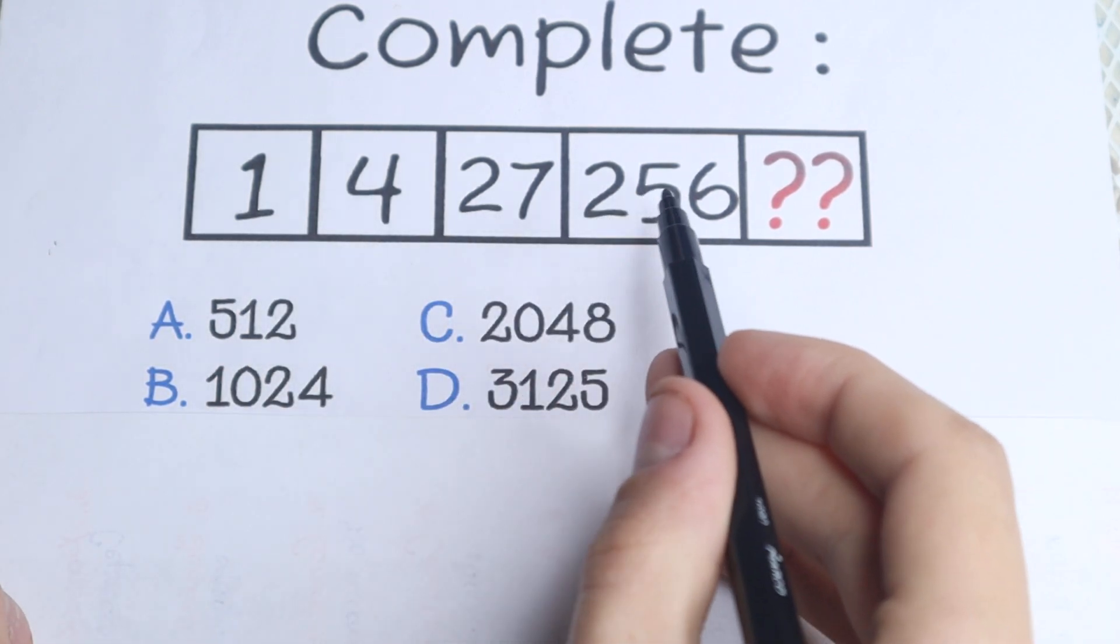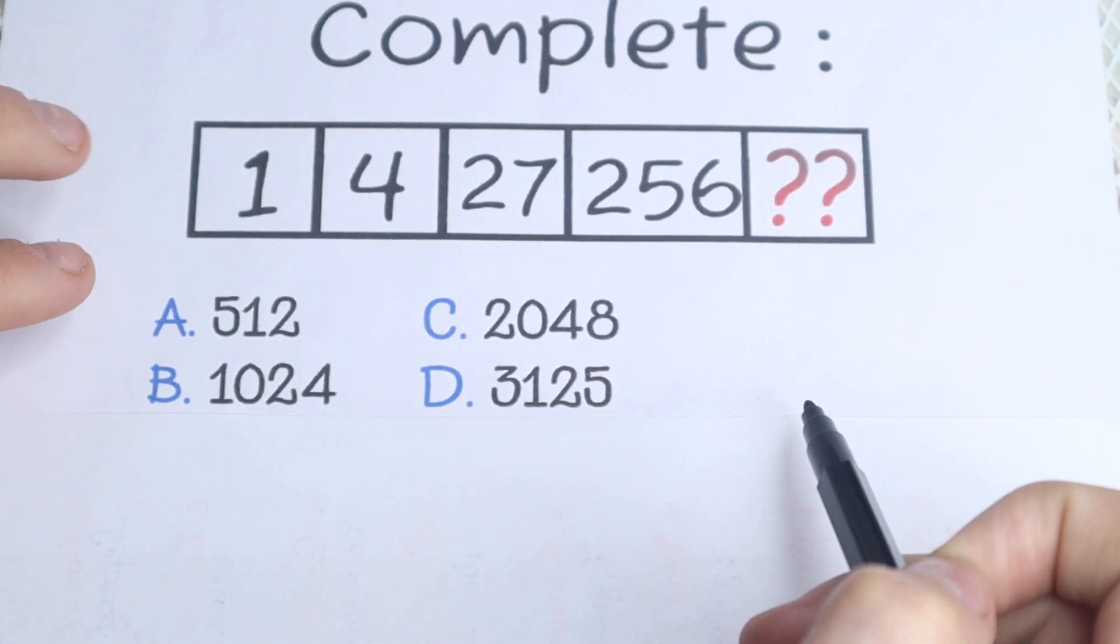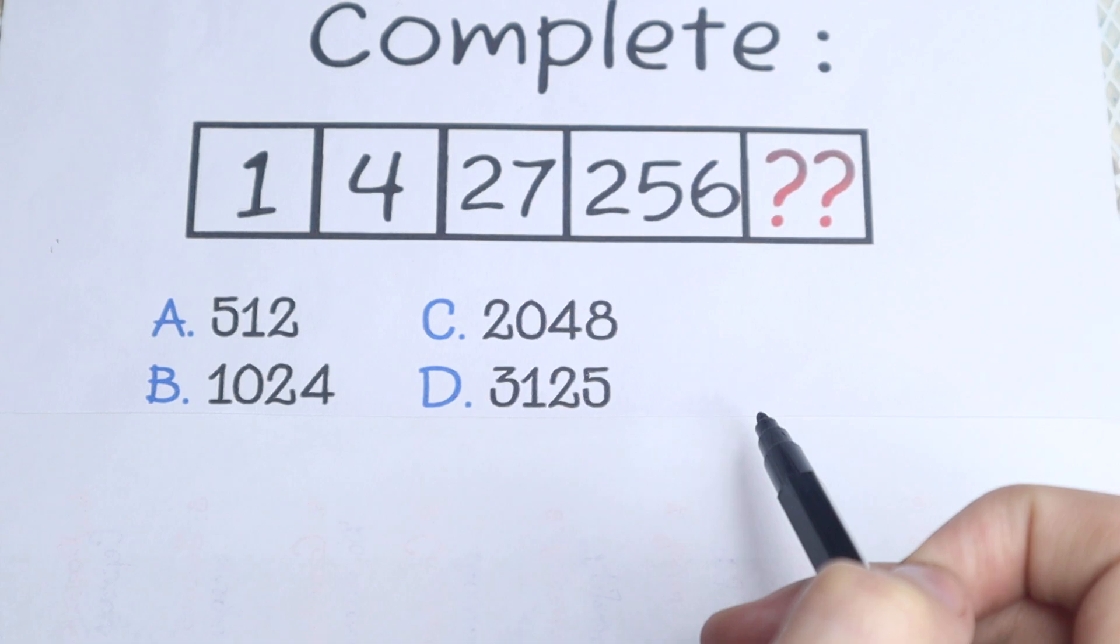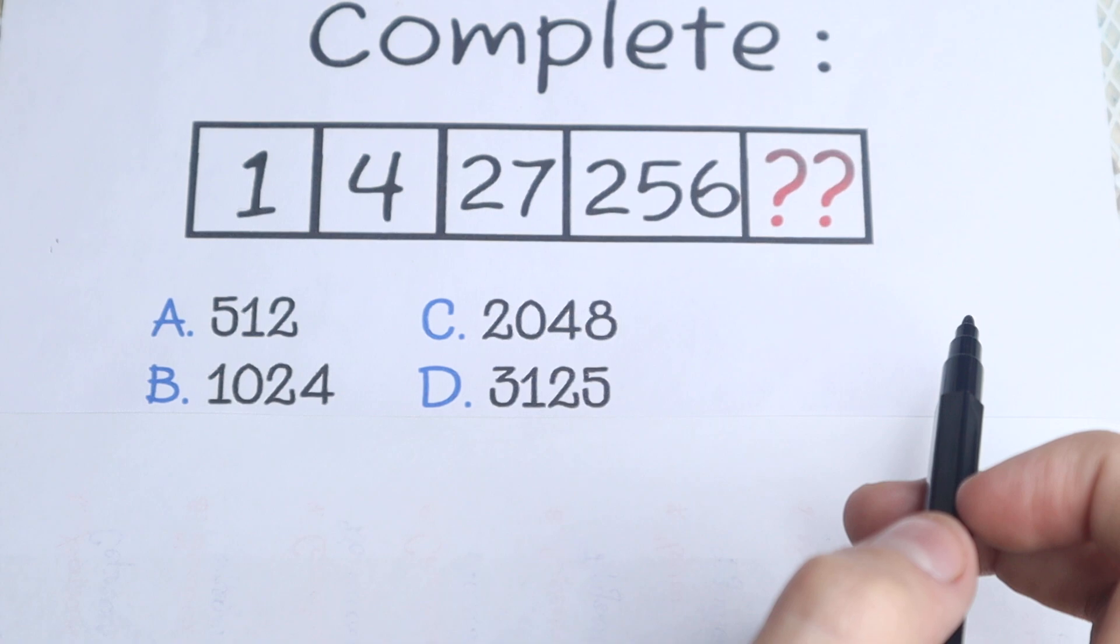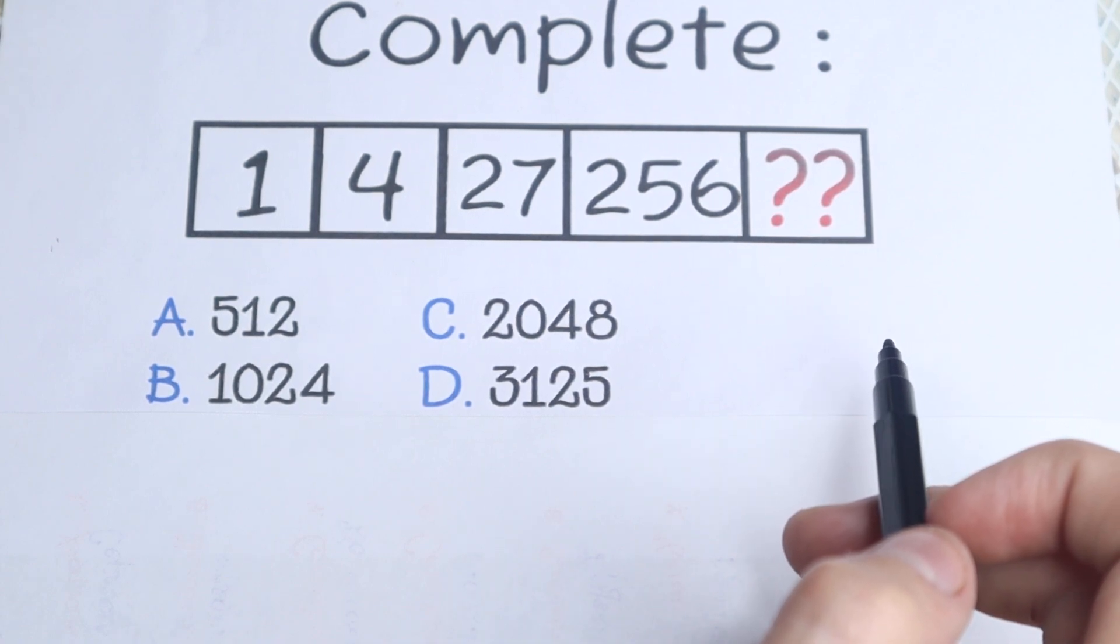We have 1, 4, 27, 256 and we need to find the last number. Right here on the bottom we have a lot of options, we have A, B, C and D, so I suggest you to pause the video and try to solve it by yourself. It's really interesting to check our answer here in just 30 seconds. So solve it by yourself and write your suggestion into the comments section.